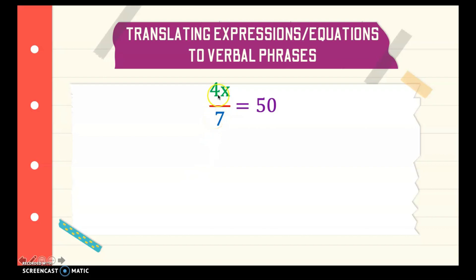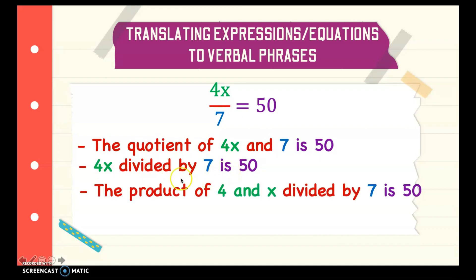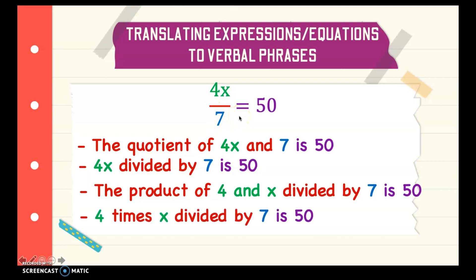We have another example: 4x over 7 is equal to 50. This over here, in fraction form, means it's division. So we need to divide 4x by 7 and we should get 50. Our translations to verbal phrases are: first, the quotient of 4x and 7 is 50. We can also say 4x divided by 7 is 50. Or, the product of 4 and x, times x, divided by 7 is 50. And lastly, 4 times x divided by 7 is 50.